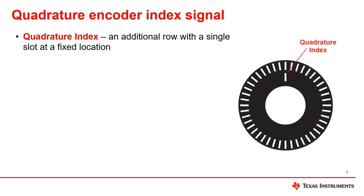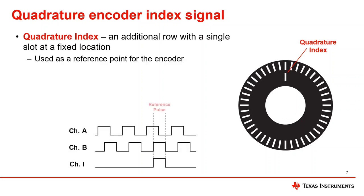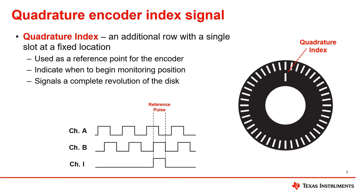Quadrature encoders can also generate an additional signal known as a quadrature index, also known as the zero position or the reference point of the quadrature encoder. The quadrature index is an additional row along the encoder that has a single slot located at a fixed point, which serves as the reference point and denotes the zero position. This index signal serves many purposes: it can be used to indicate when to begin monitoring the position, signals when a complete revolution of the encoder disk has been made, and aids in position verification in the event of glitched signals.